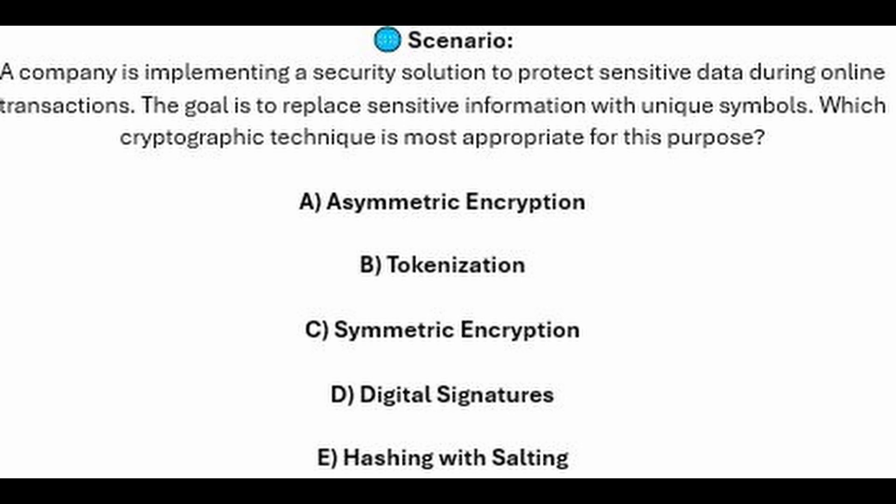Is it A, asymmetric encryption? Is it B, tokenization? Is it C, symmetric encryption? Is it D, digital signatures? Or is it E, hashing with salting?